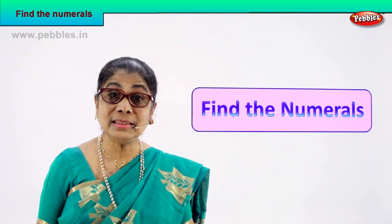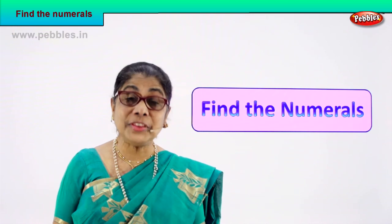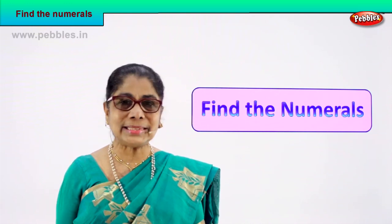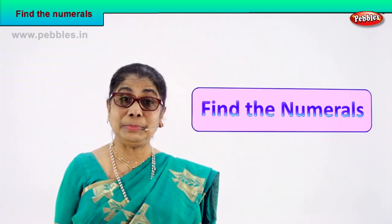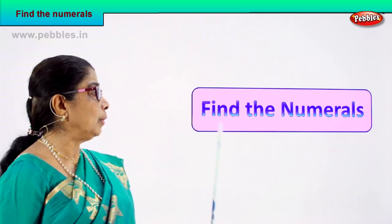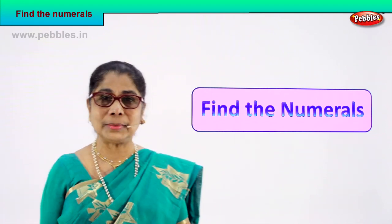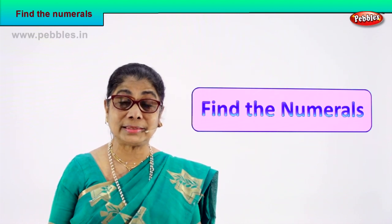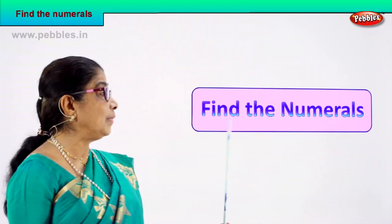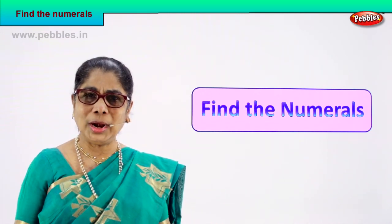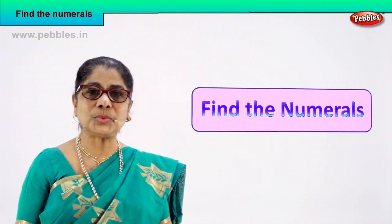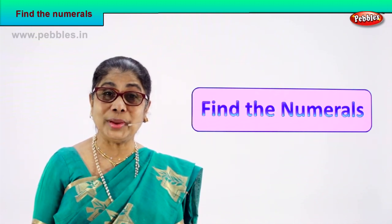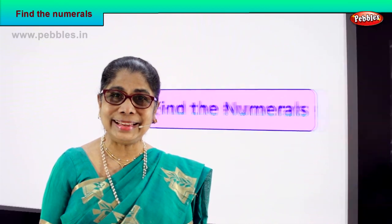Hi children, we learned the number names from 51 to 60. You know how to spell 50, you know how to spell 60, and you can write the number names 51 to 60. Now what we are going to do is find the numerals. We will do a small exercise — a very interesting exercise. The number name will be there and you will find the numeral. One by one we will do it — you look, spell, and see what is the numeral for that number name.